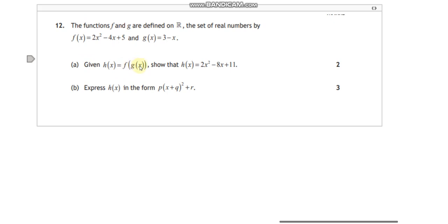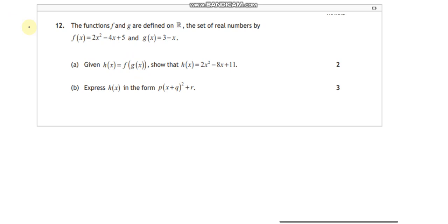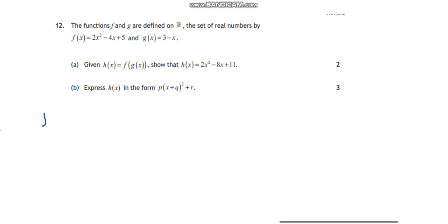So for this one, this really mathematically just means I'm putting g into f. So I would start off by saying, okay, what is my f function? What is my f function? f(x) is 2x squared take away 4x plus 5. So that's what it's in terms of x. But now instead of x, I'm going to put in g of x. So g of x is 3 take away x.